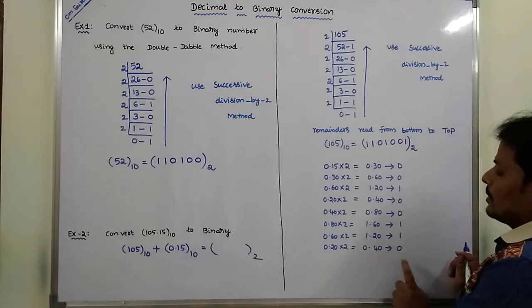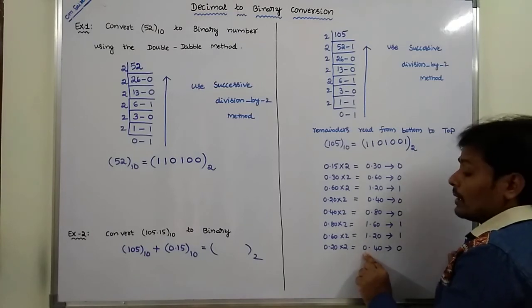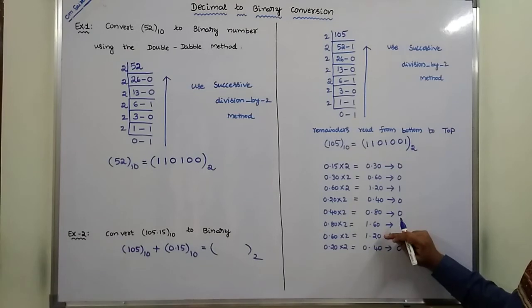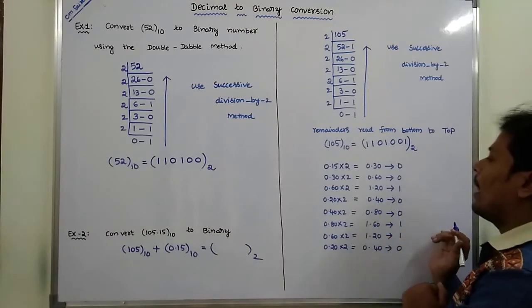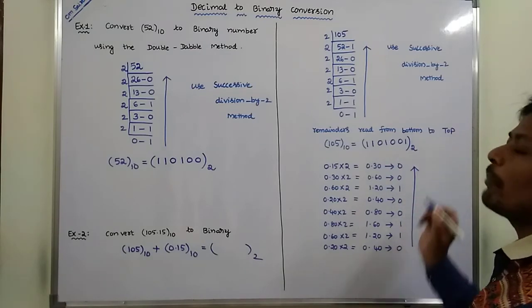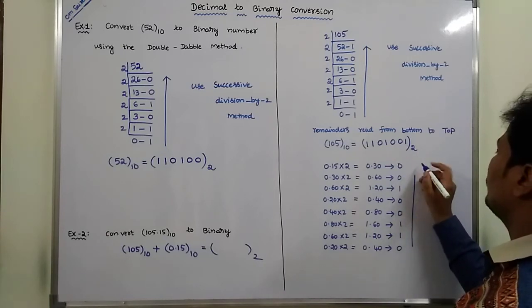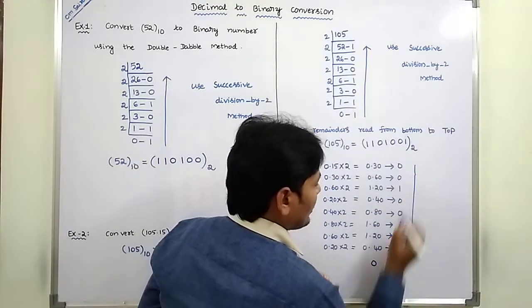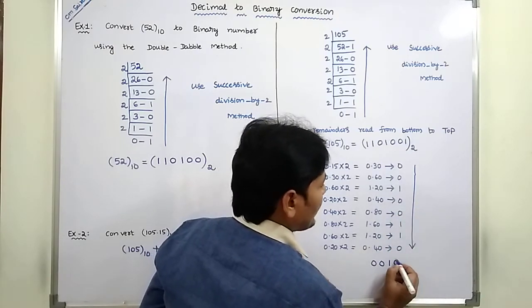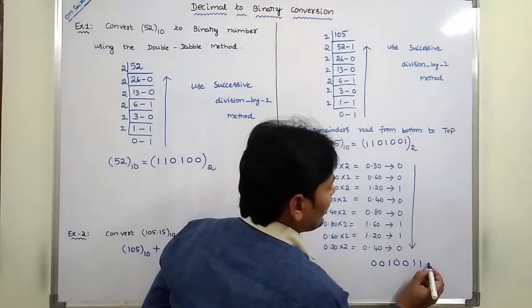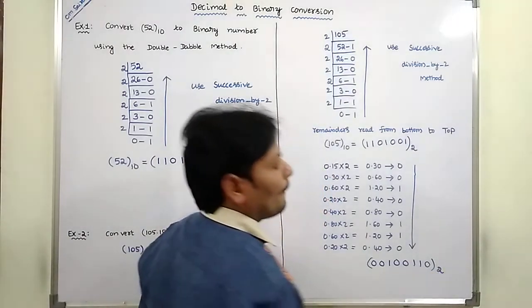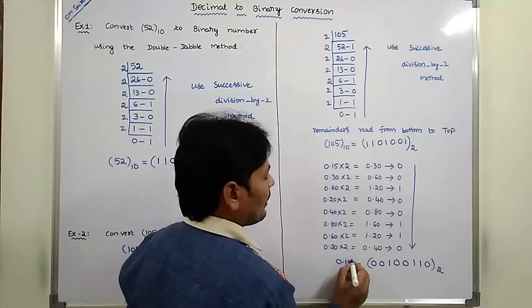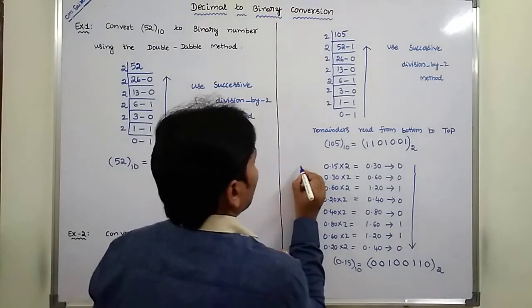At this point the same sequence is repeated, so we stop the process and read the integer parts from top to bottom: 0, 0, 1, 0, 1, 1, 0. This is the equivalent binary number for the fractional part 0.15 base 10. That completes the second subproblem.